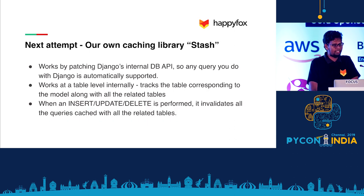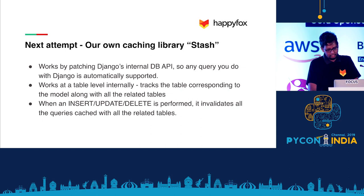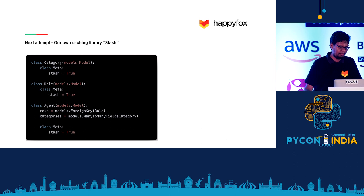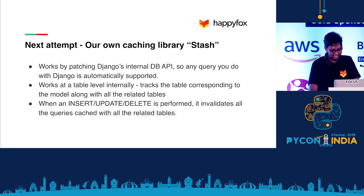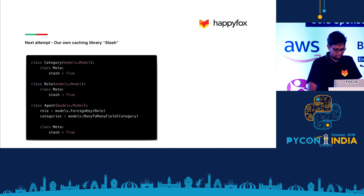So we ended up writing our own custom library to do this, and we did it by patching Django's database layer. The library internally tracks what tables are used, what tables that table is related to, and whenever an insert, update, or delete is performed, it invalidates all the queries tagged to those tables. The library is called Stash. To use it, all you have to do is specify a meta-class property: stash equal to true. Compared to the previous example, all three models are automatically cached and invalidated — it just works.